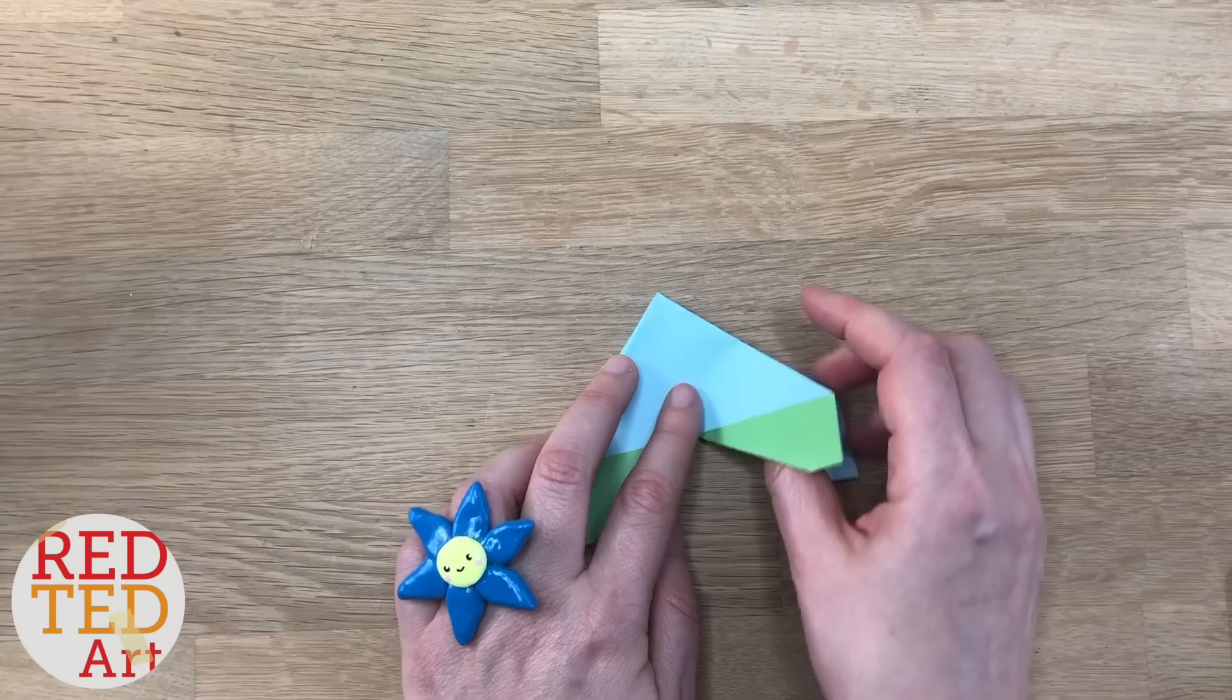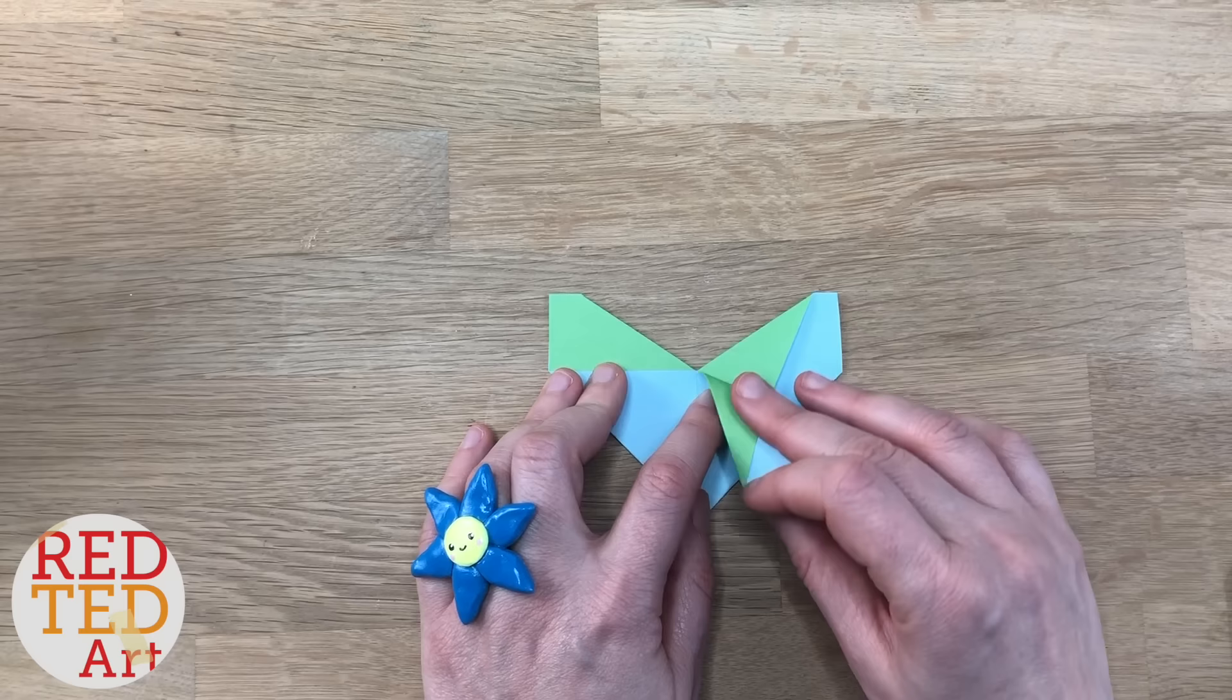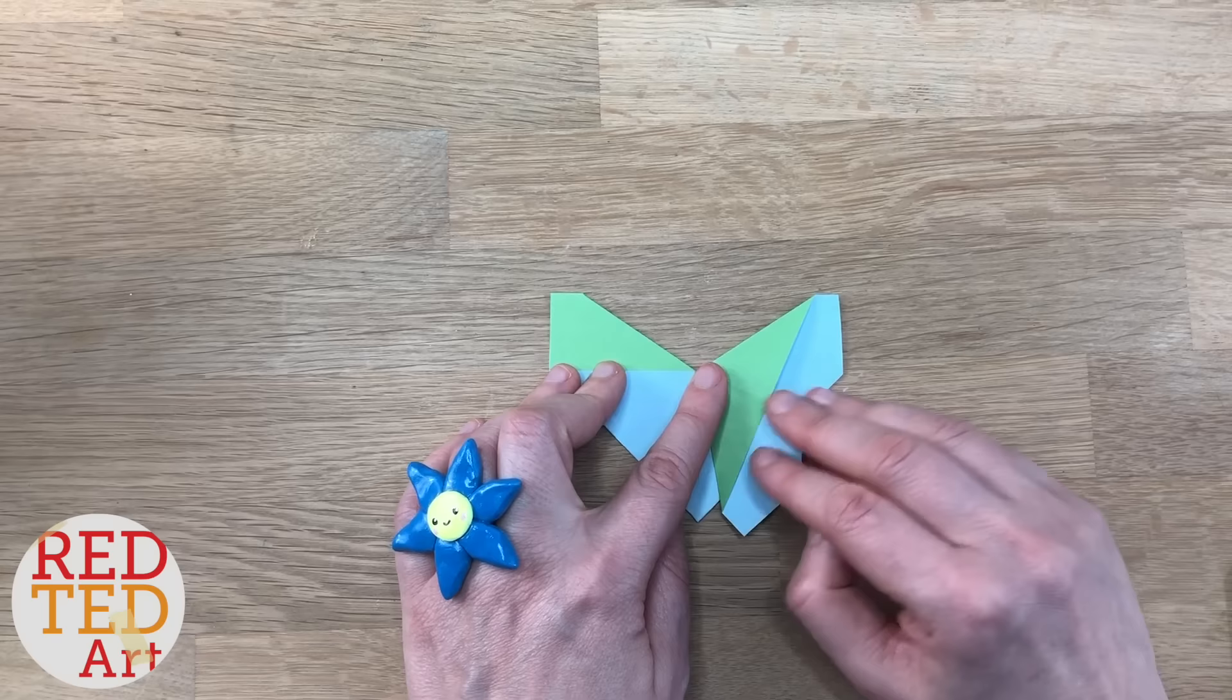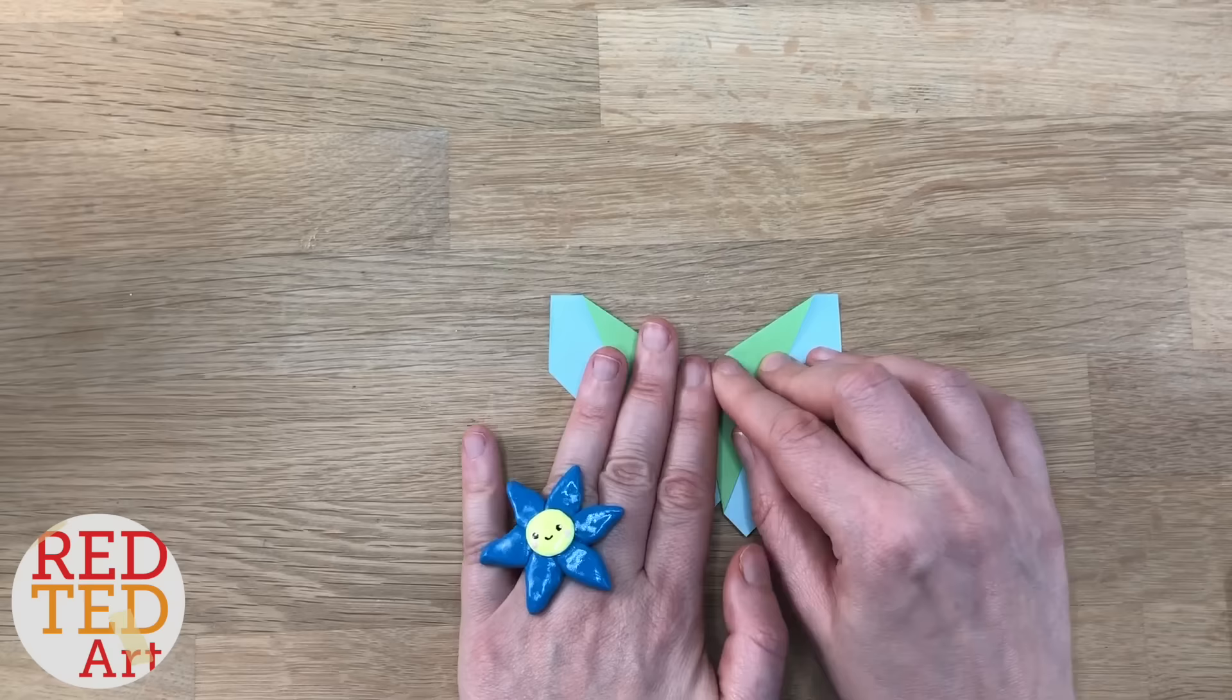We're almost there. Now to turn it into a butterfly, we take one of the two flaps and fold it down. You can choose whether you want a fat body or a thin body. I think thinner is a bit nicer. Then you bring this one down, and you have your butterfly bookmark corner finished.